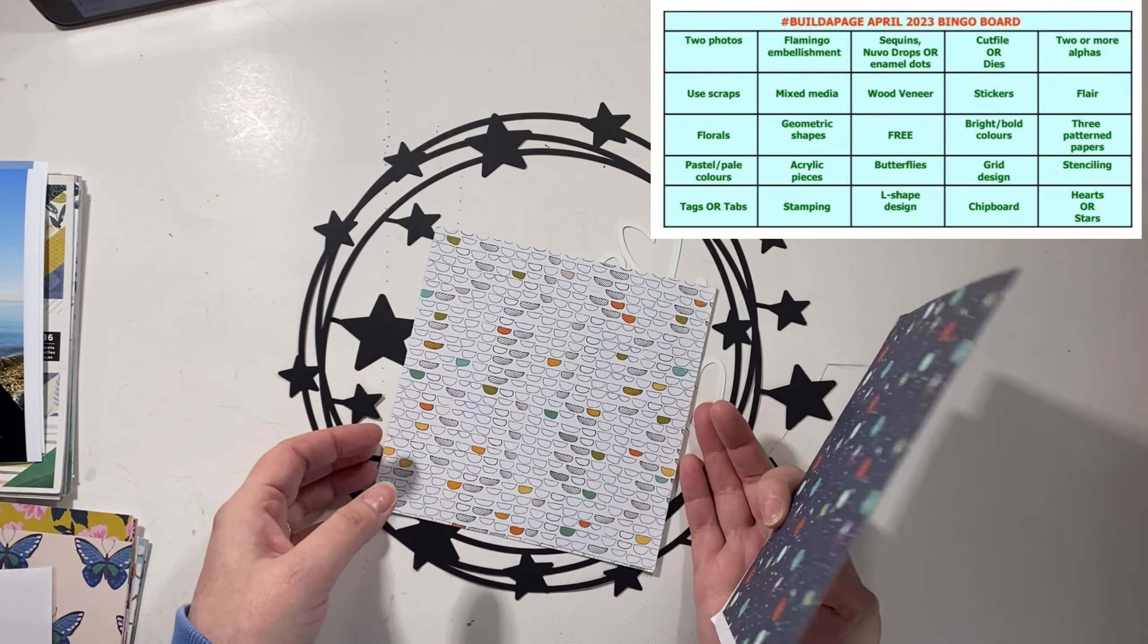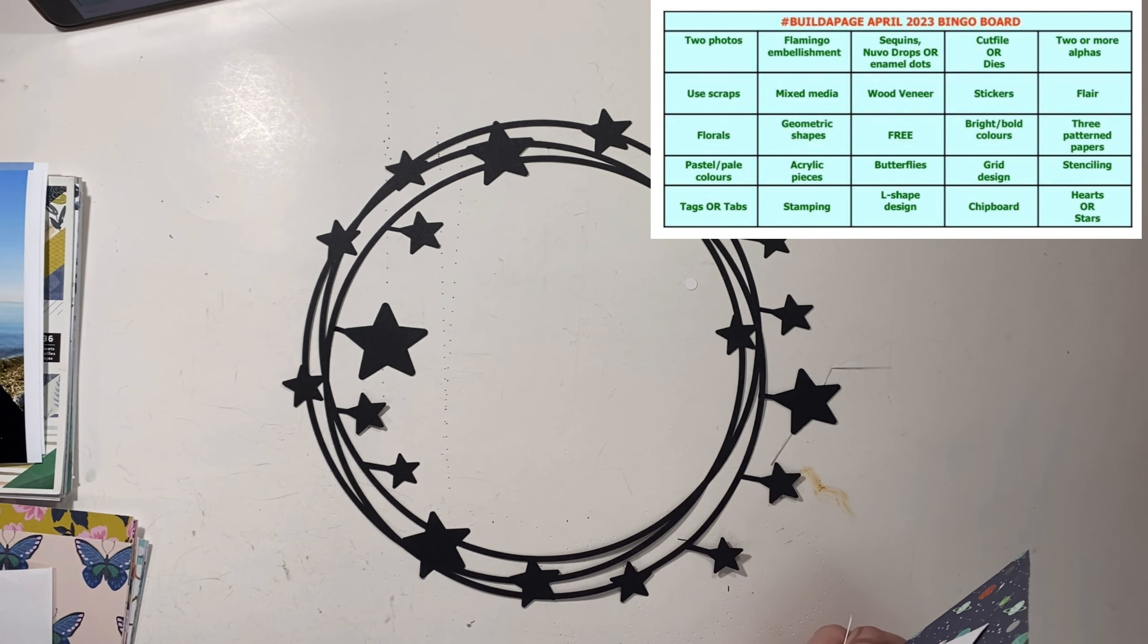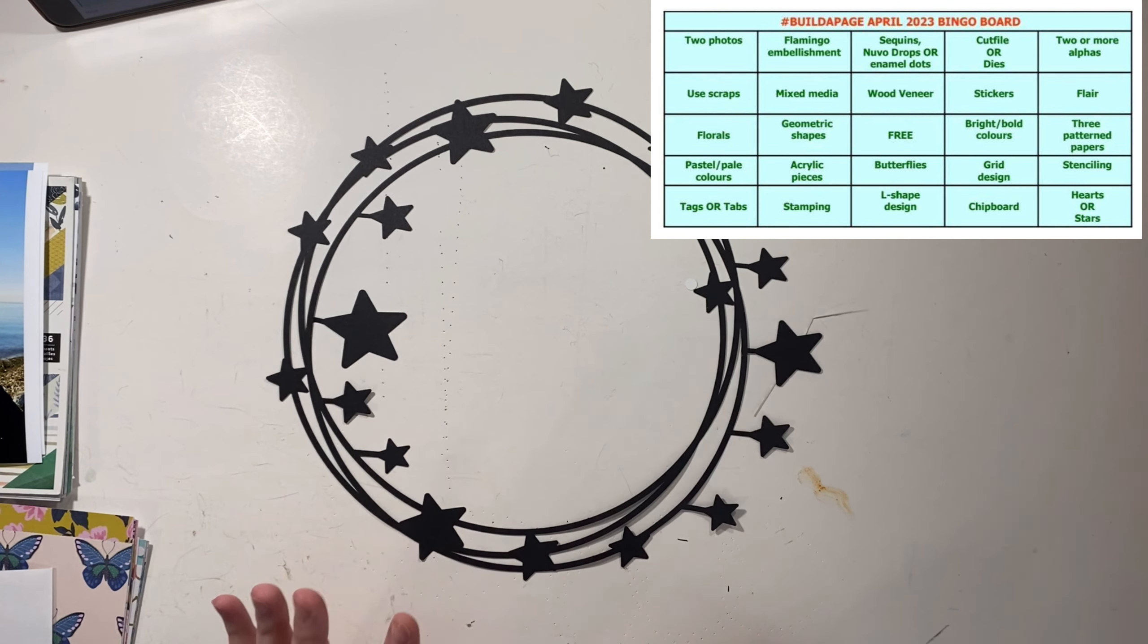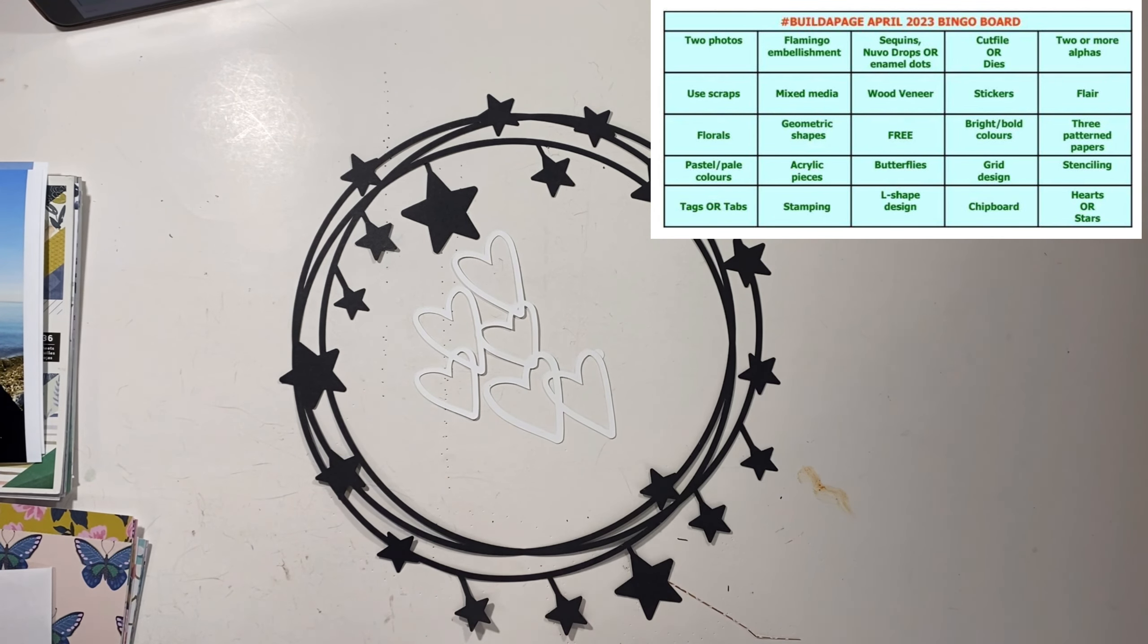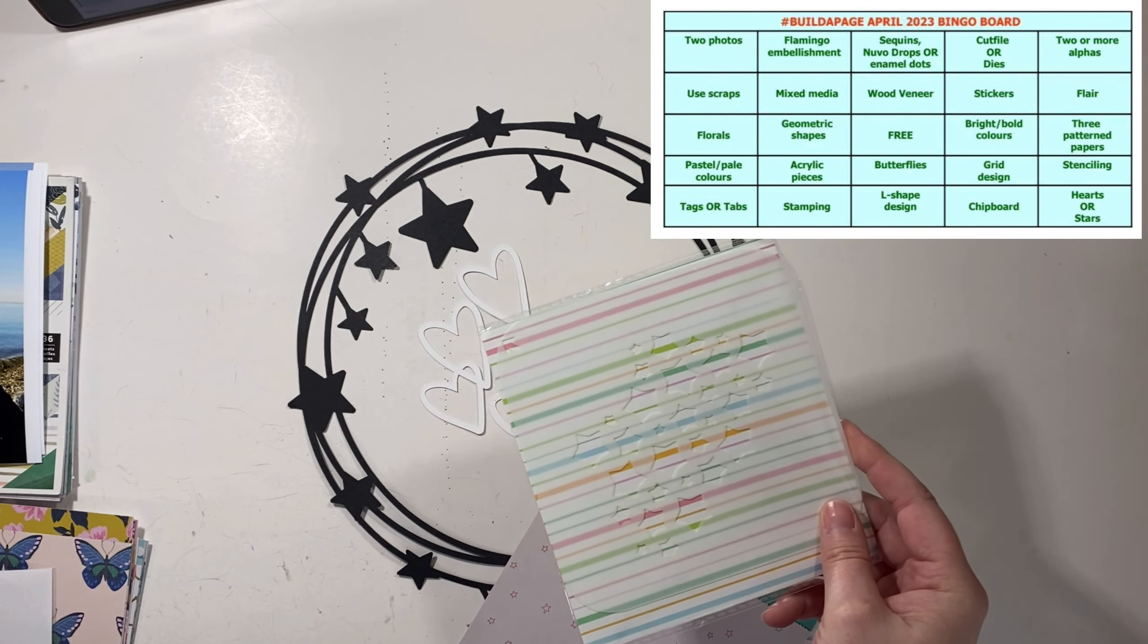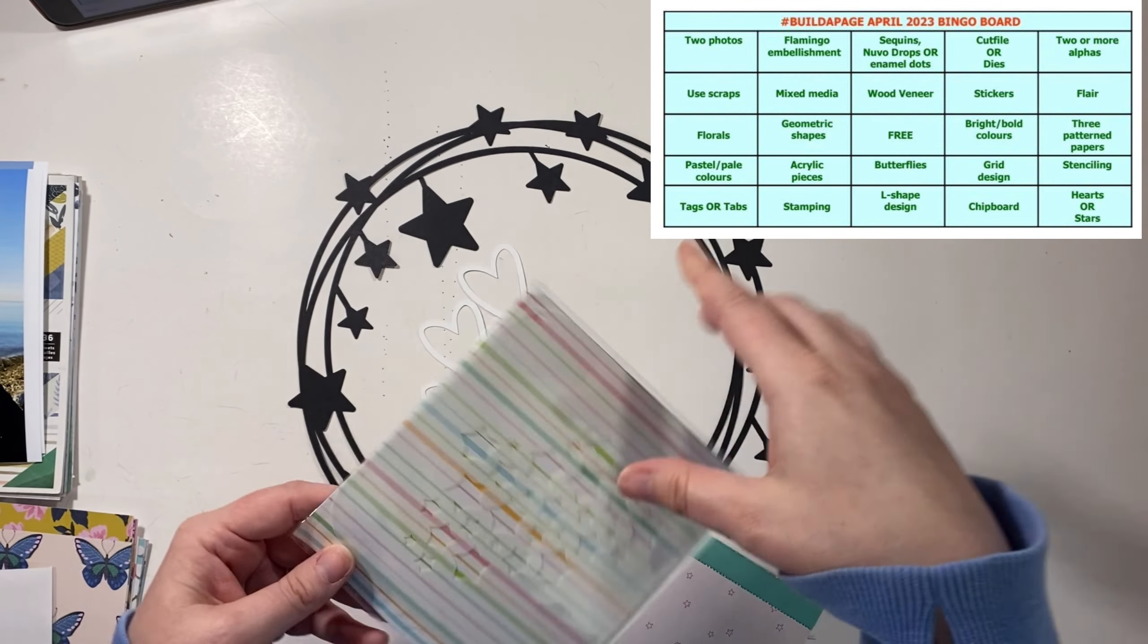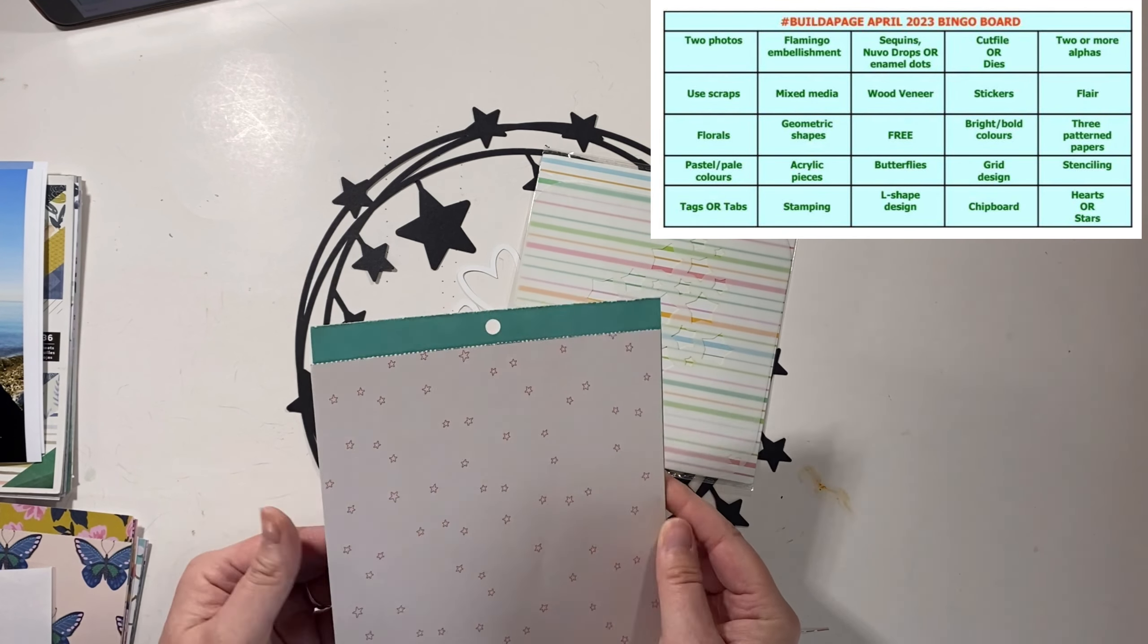Okay, for the last row I need two or more alphas, flair, three pieces of pattern paper, paper stenciling, and hearts or stars. I have the stars. I also have the hearts. I'm not sure which one I'm going to use, but they're available to me. Stenciling—I have stencils galore, and I have a star stencil. This is really cool. It's from Shandney, and you line it up and you rotate it and it makes a wreath around with the stars. So I have that to play with.